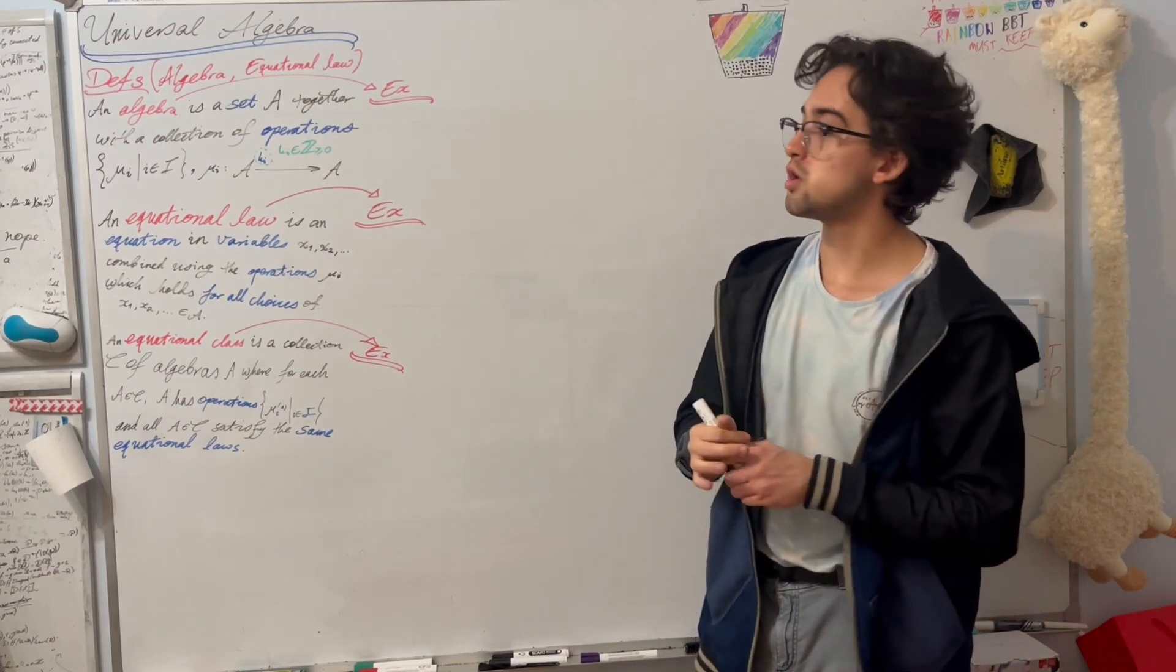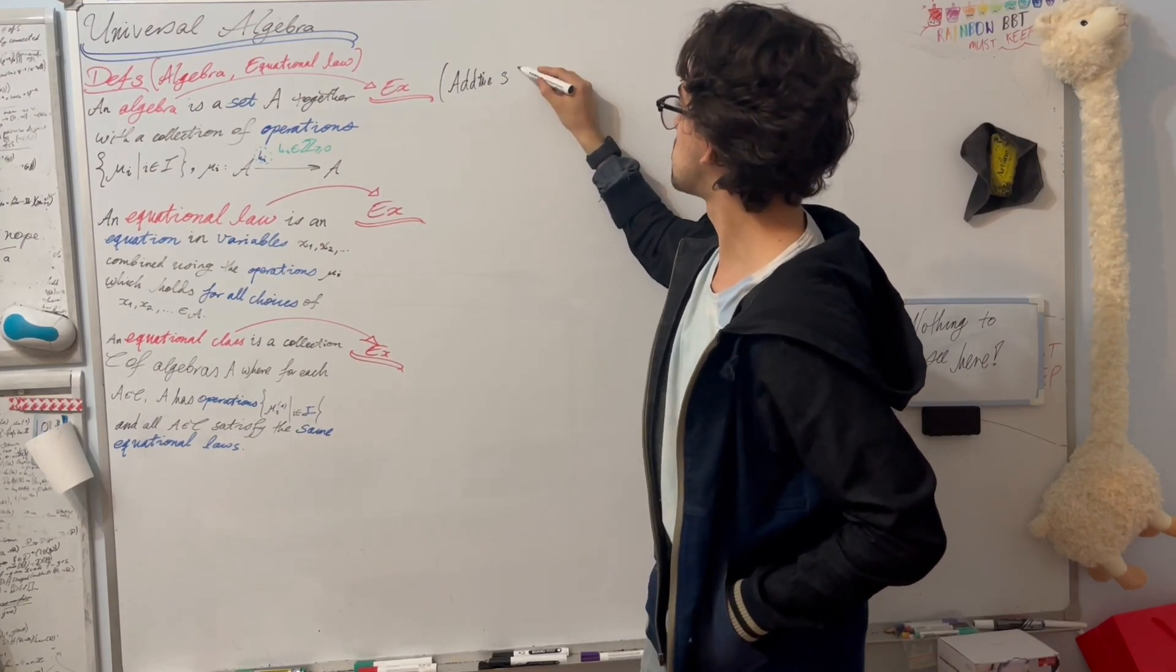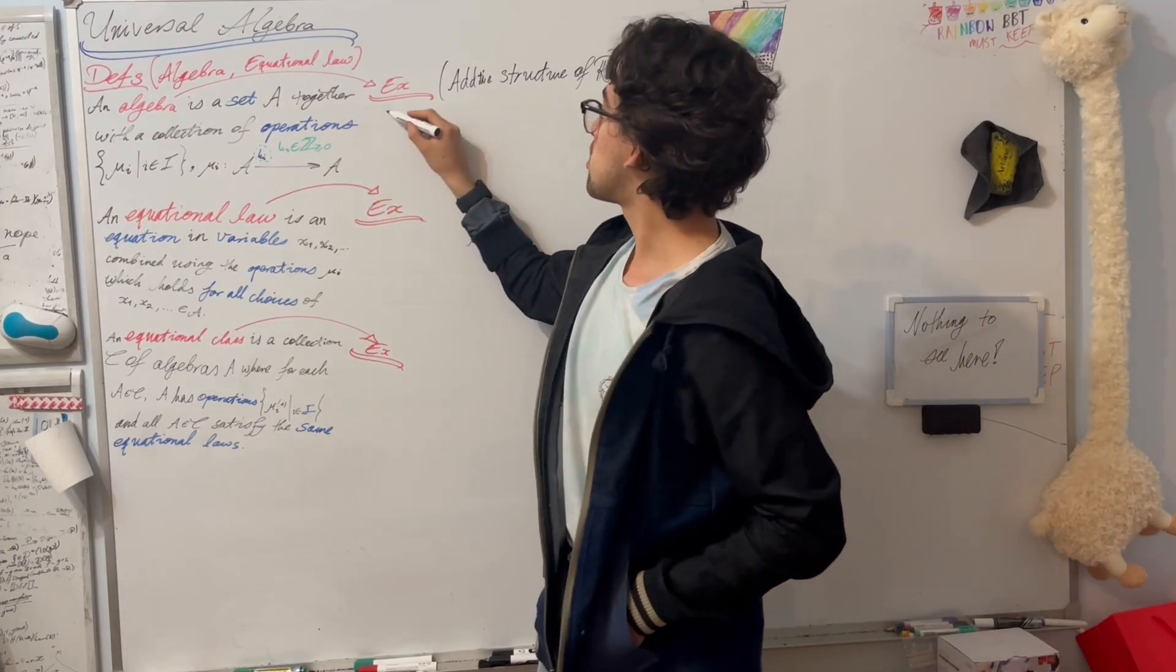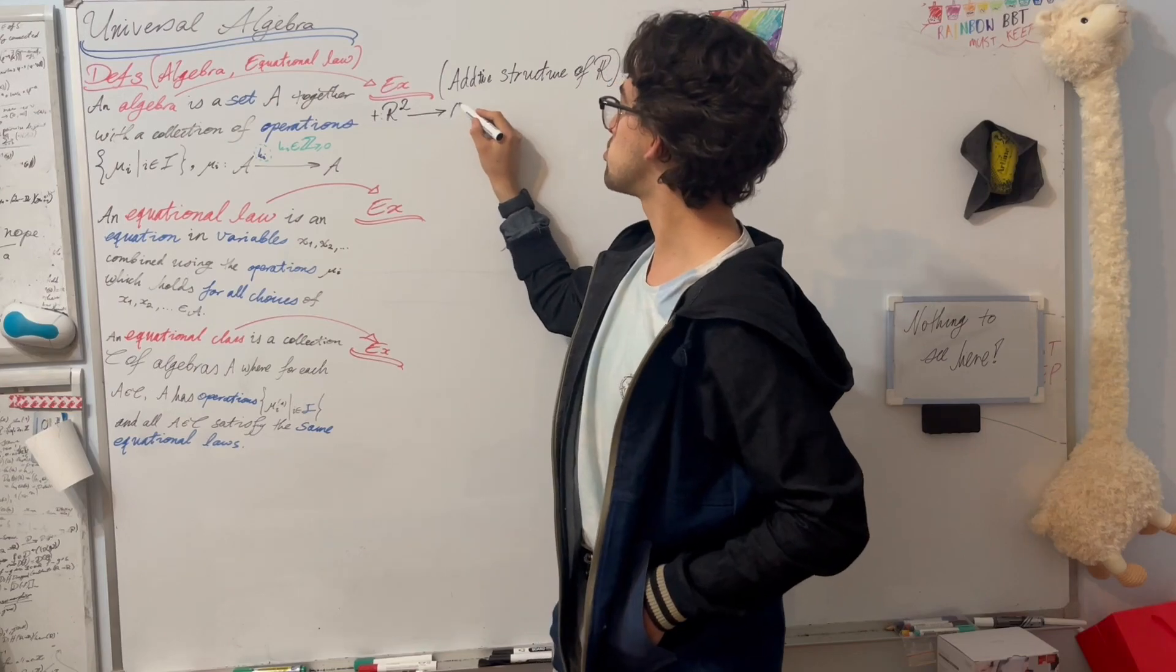To make this concrete, let's have a look at the additive structure of R. For instance, on R we have addition, which takes R^2 back to R, taking a pair (x,y) to x plus y.